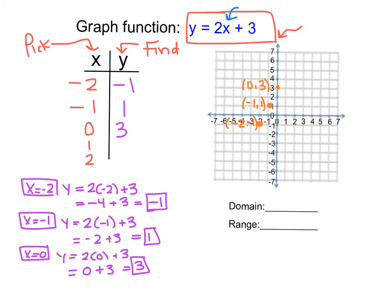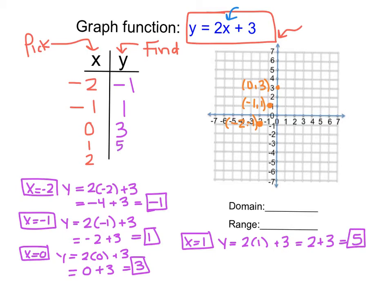Then we have x equals 1. So y equals 2 times 1 plus 3, which is really 2 plus 3, which is 5. So when x is 1, y is 5.